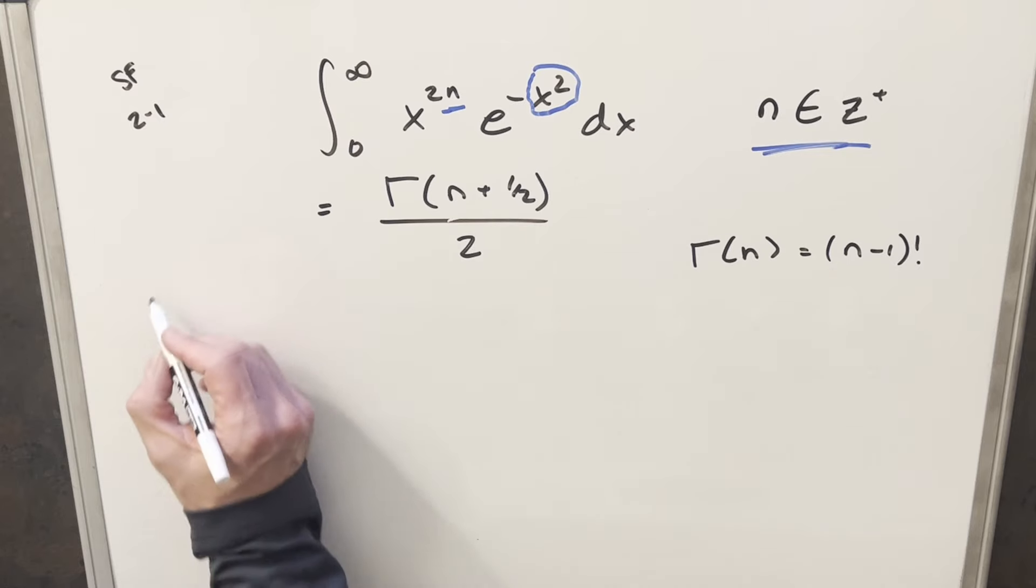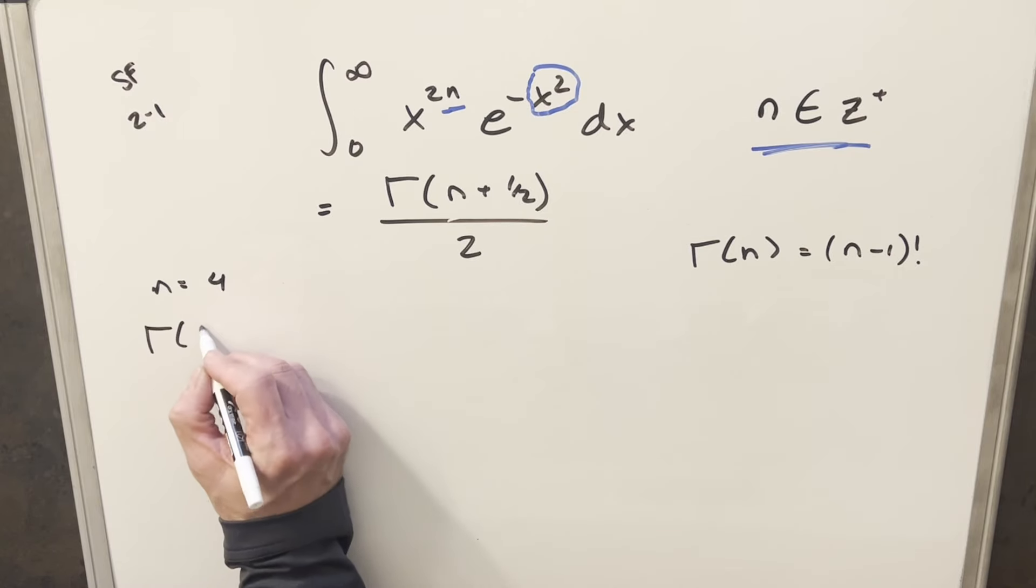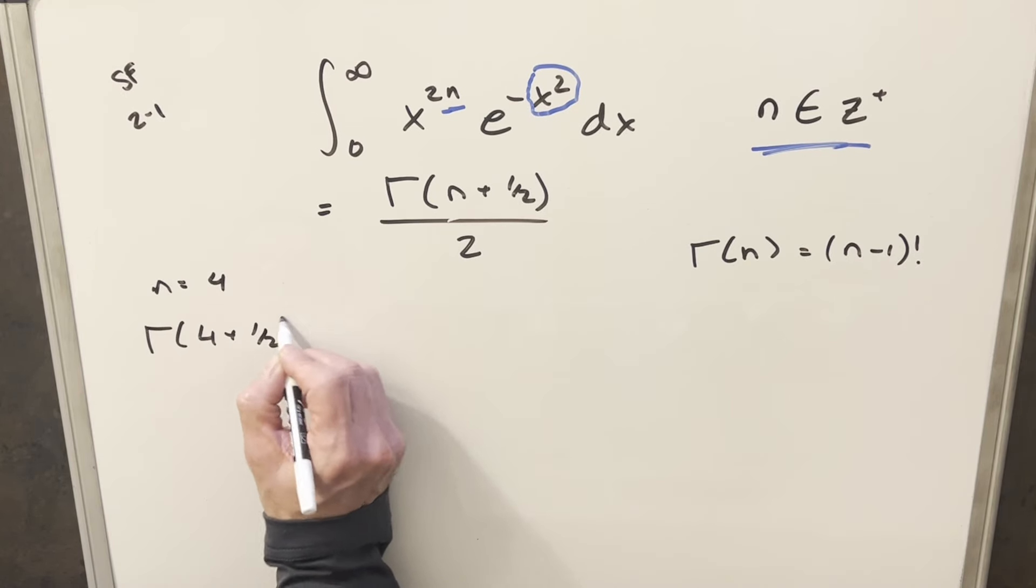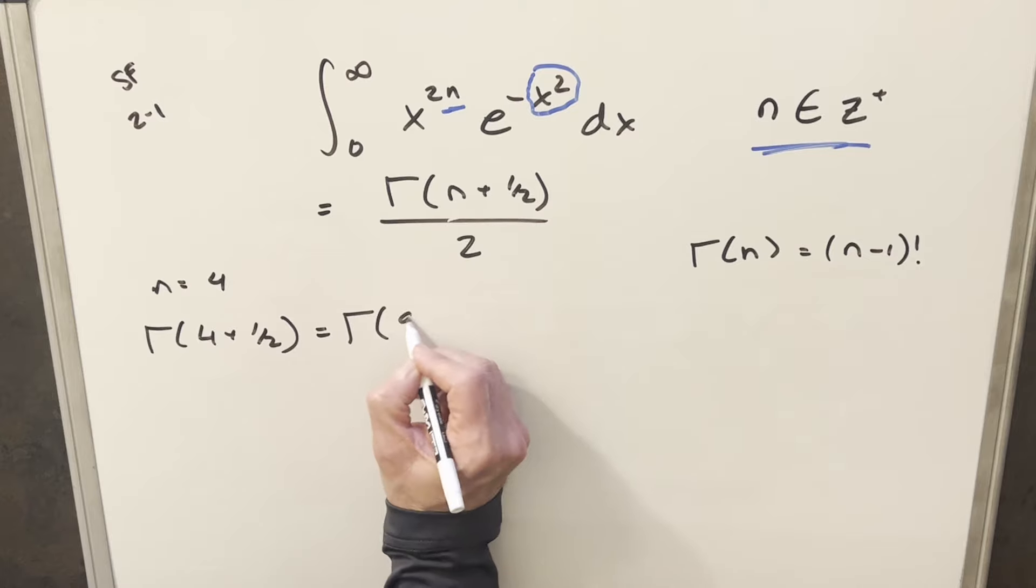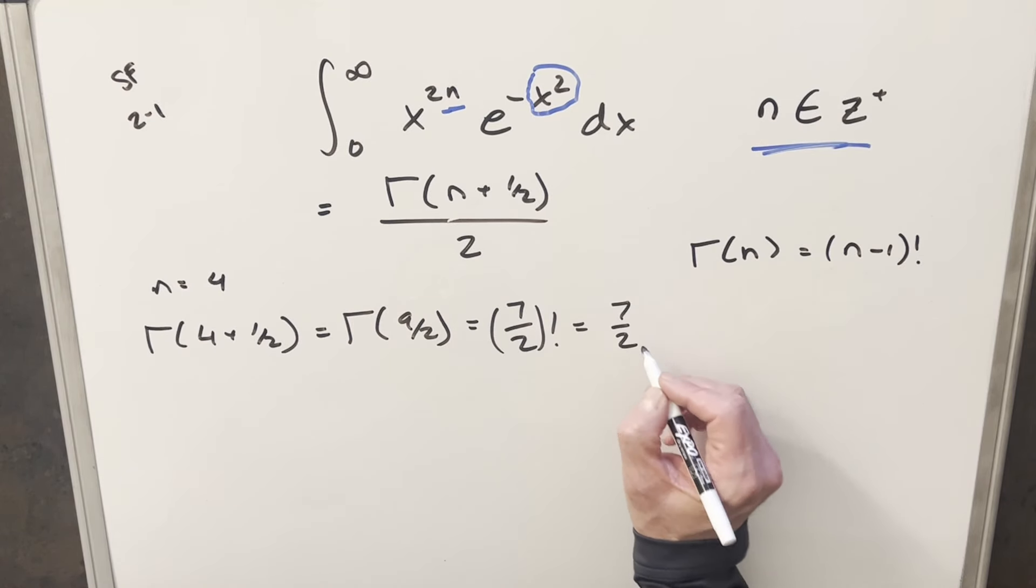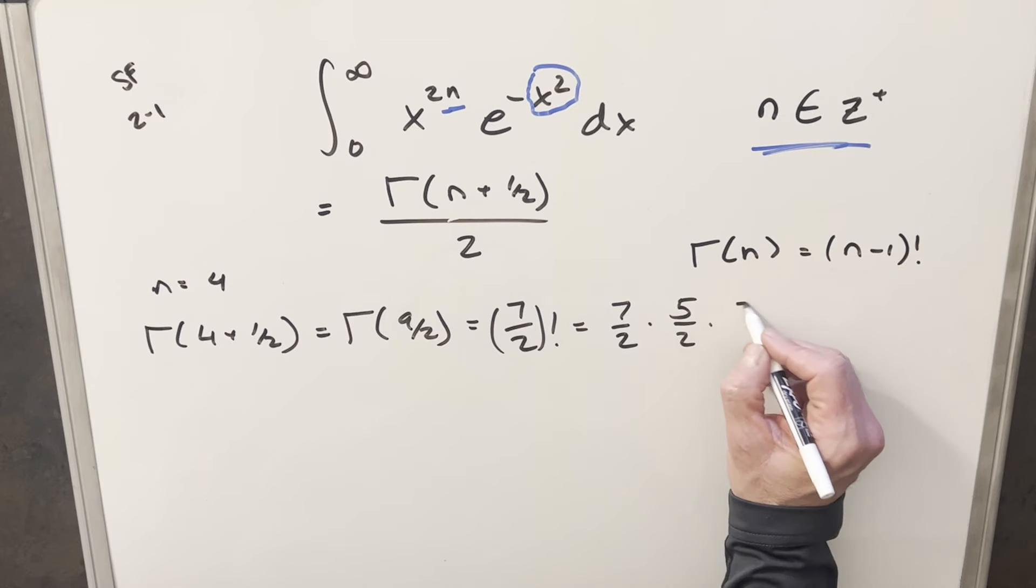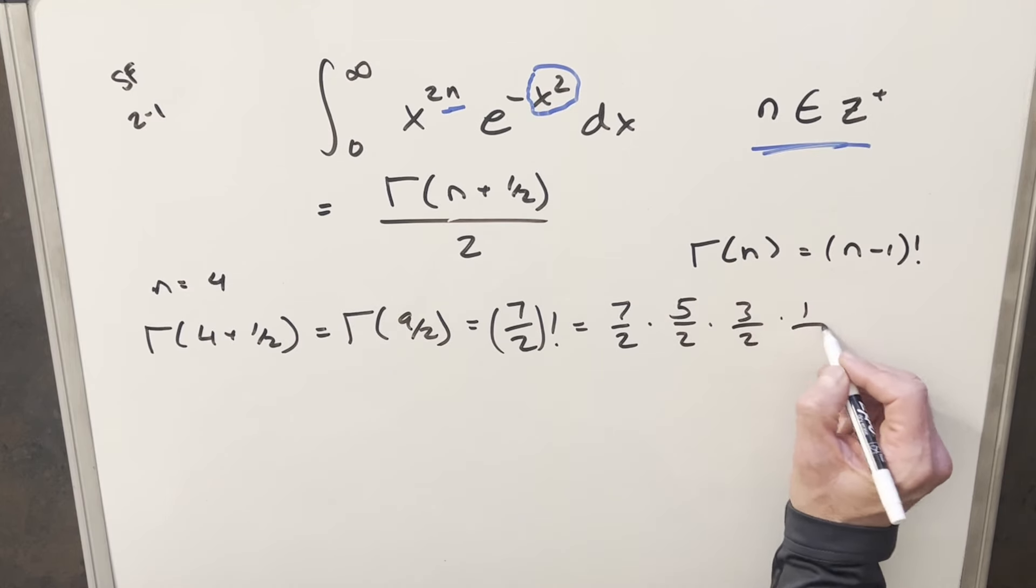So for gamma of n plus 1 half, let's just imagine a scenario. Like let's pretend, let's just look at n equals 4 for example. So for n equals 4 for this thing, this is going to be the same thing as gamma of 9 halves. But using this definition, we could also write this as 7 halves factorial. And then we could just expand this out, decreasing each term by one. So we go 7 halves times 5 halves times 3 halves times 1 half.